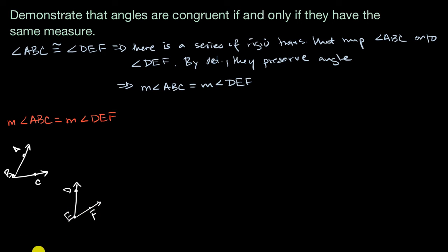And what we will now do is, let's do our first rigid transformation. Let's translate angle ABC so that B mapped to point E. And if we did that, then ABC is going to look something like this. B is now mapped onto E. This would be where A would get mapped to. This would be where C would get mapped to.